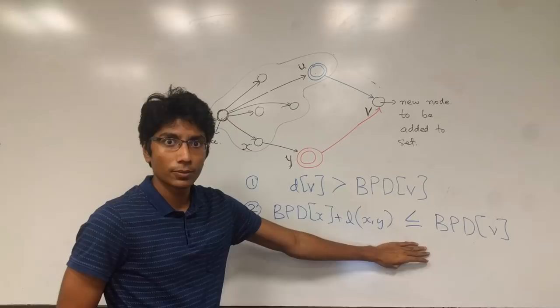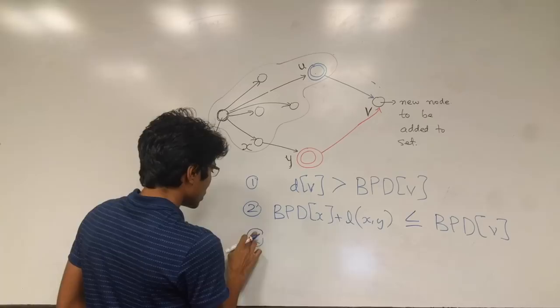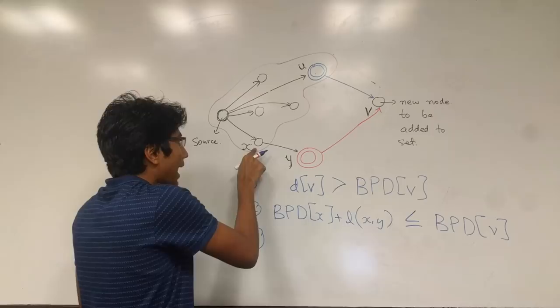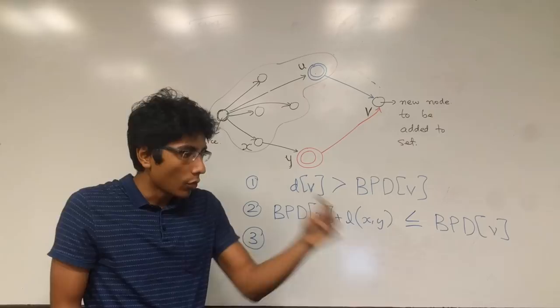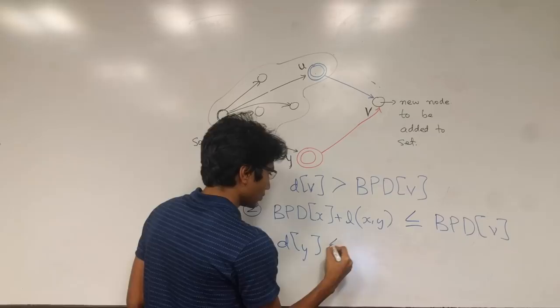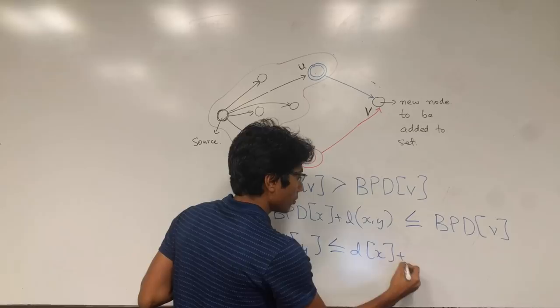The third condition is that because x and y are just on the boundary of visited and not visited, it means that we had visited x at some given point of time. When we added it to our set, we must have tightened this edge or not tightened that edge. But that gives us that d of y is less than or equal to d of x plus this edge. There's no guarantee that we did tighten that edge, that's why it's less than equal to, but that's a condition.